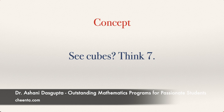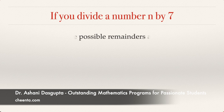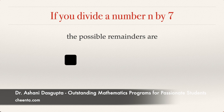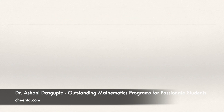Whenever you see cubes, think about the number 7. At least one of the things you can think about is the number 7, and I'll show you why. If you divide a number N by 7, what are the possible remainders? If you divide any integer by 7, there are 7 possible remainders: 0, 1, 2, 3, 4, 5, and 6. Can you give examples of numbers of each of those kinds in the comments?